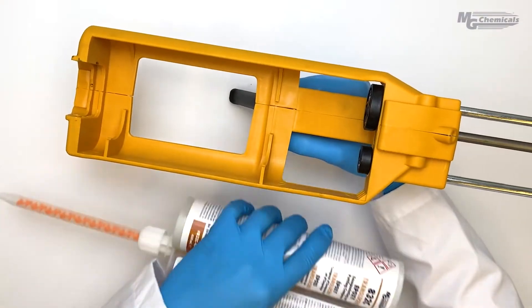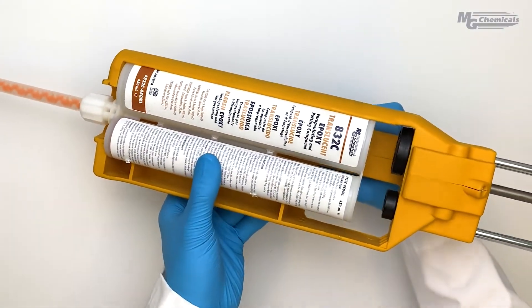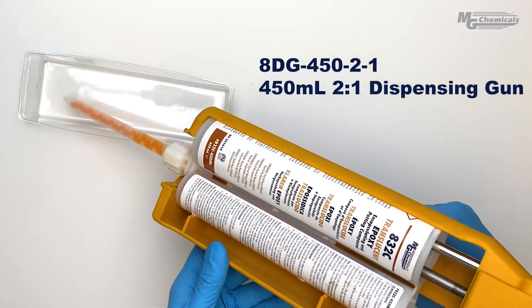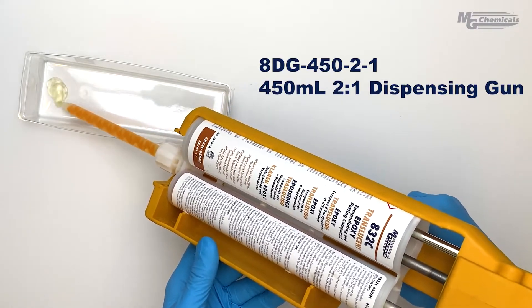8DG-450-2-1 is the dispensing gun for this cartridge system. Load the cartridge into the gun, push the pistons snug into the back of the cartridge, and you're ready to pot.